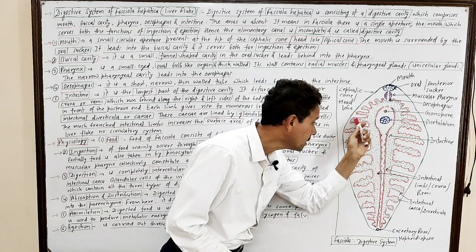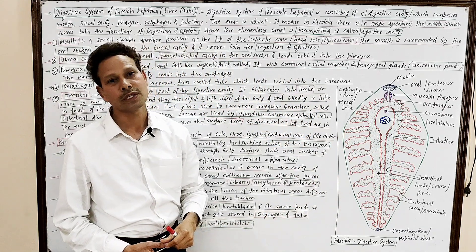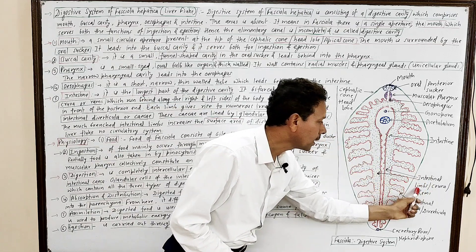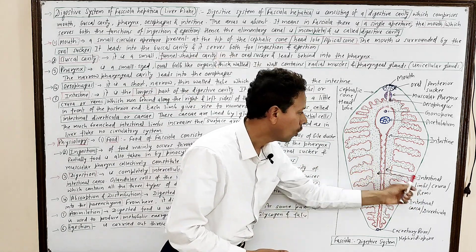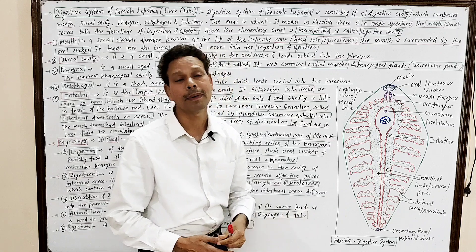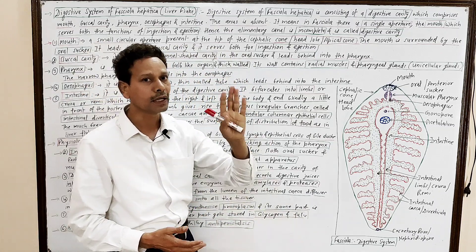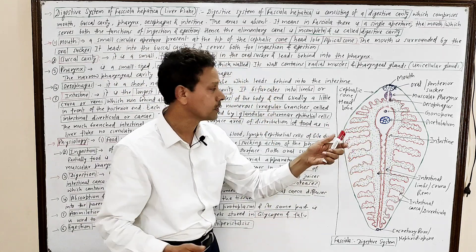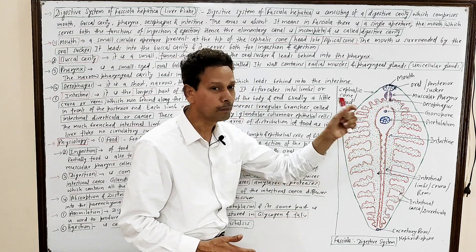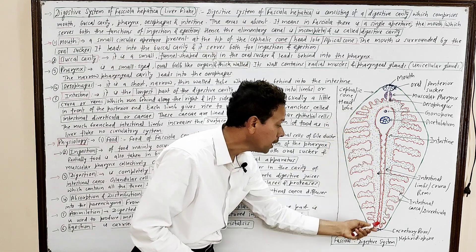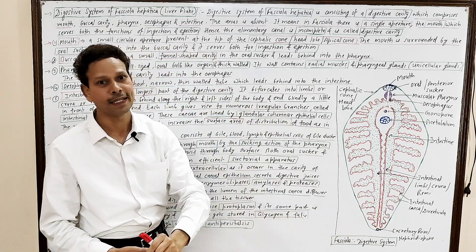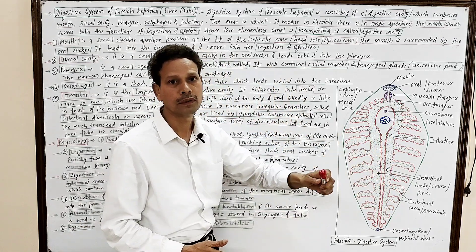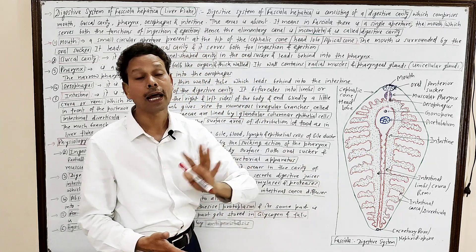The intestine is the largest part of the digestive system, having two limbs — right and left intestinal limbs, also called crura or rami. Both limbs are blind posteriorly, as there is no anus. Both limbs give rise to numerous highly branched intestinal caeca, or diverticula.